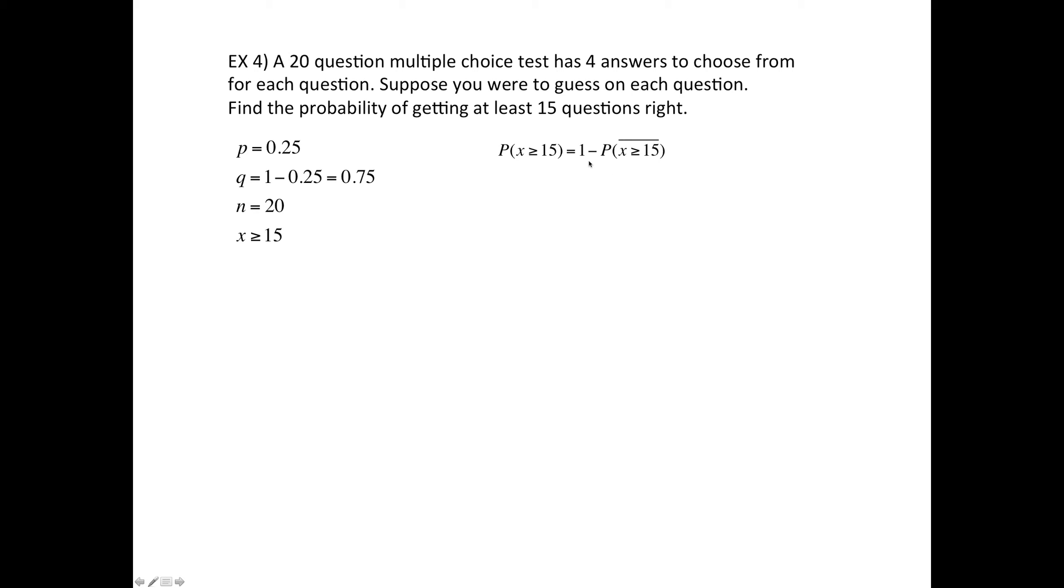And with these, this is the kind where we need to do 1 minus the opposite. You actually don't have to, but it is easier to do it this way. Because otherwise, if you don't do it this way, what you have to do is say, well, x equals 15, 16, 17, 18, 19, and 20. So that's six times you would have to do the binomial formula, and then you'd have to add all six of those answers. Yeah, that's what I thought. Let's do it this way. So you do 1 minus the opposite, and the opposite of at least 15 is that it's less than or equal to 14. So if it's not going past 15, then it's got to be 14 or below.